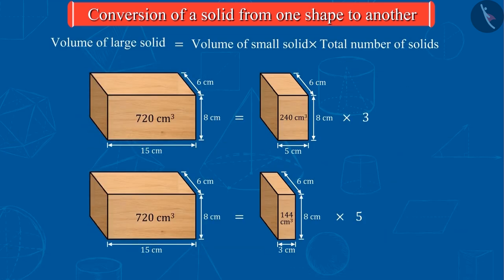So, we can say that if a solid is converted into a smaller solid of equal measure, then the product of volume of the small solids and the total number of small solids is equal to the volume of the larger solid.